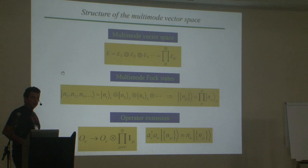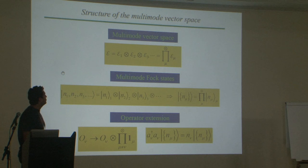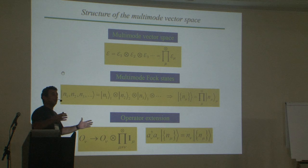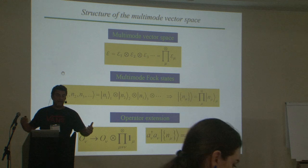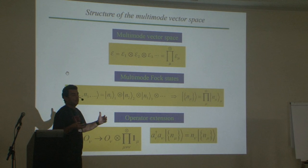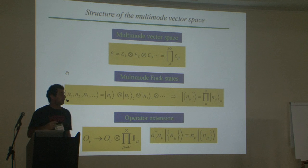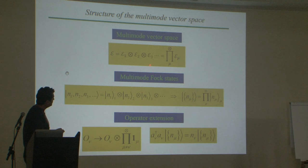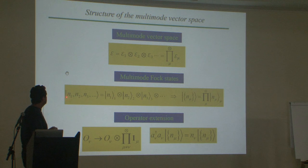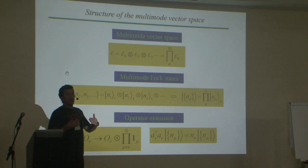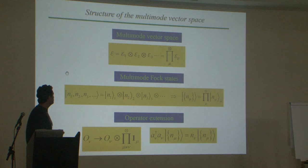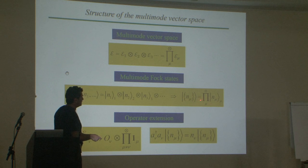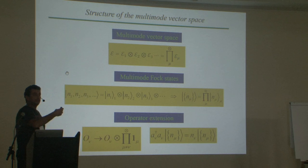Let's go back to our construction of the mode structure. We have quantized the electromagnetic field as an ensemble of harmonic oscillators, where the harmonic oscillators were the modes. The modes are established by the boundary conditions that we impose on the field. The vector space for the multi-mode electromagnetic field is composed as a tensor product of individual vector spaces of the modes. We defined already the Fock states, which are states with a well-defined number of excitations in each mode.